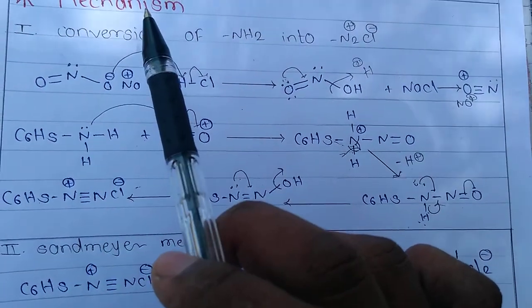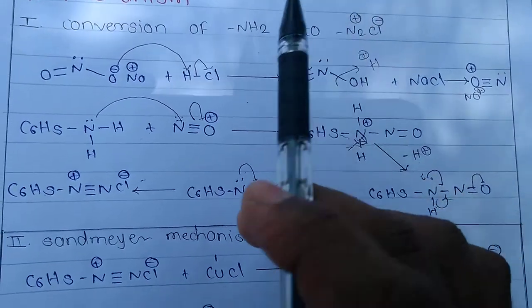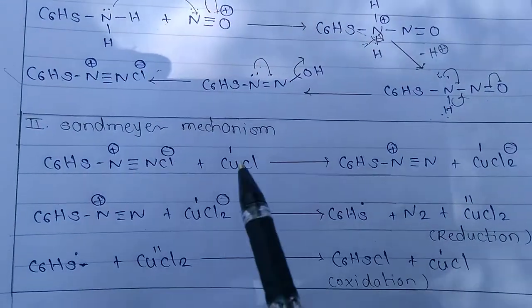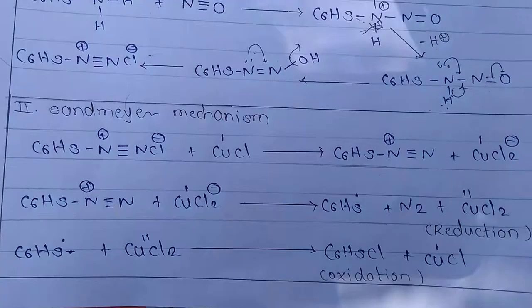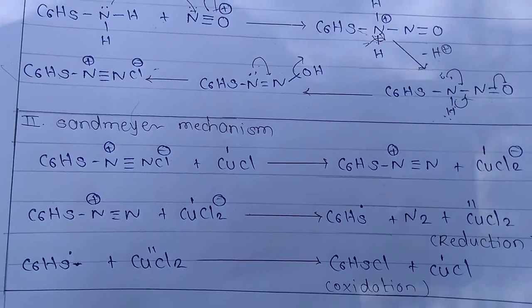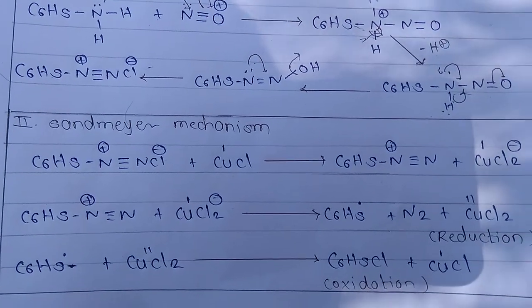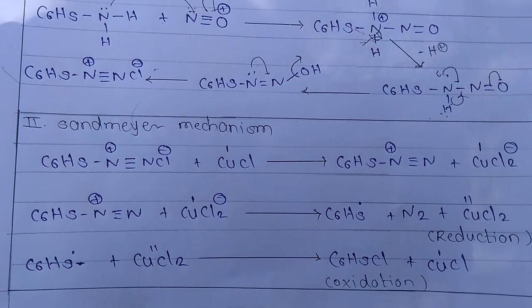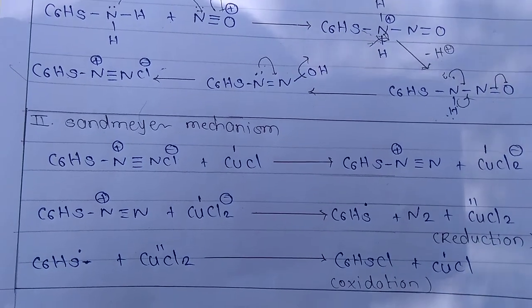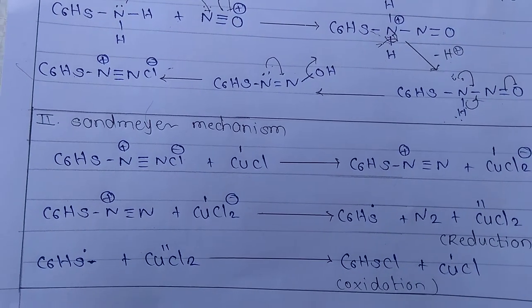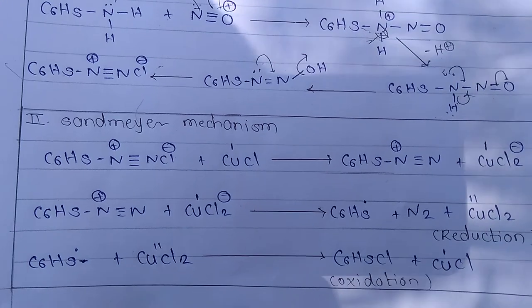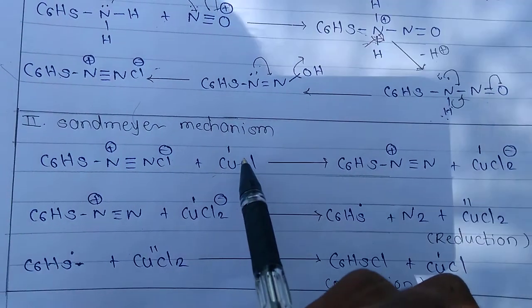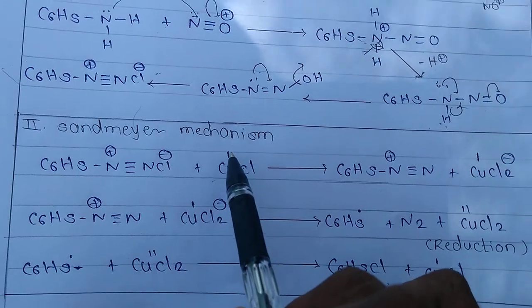So the first part of the mechanism is the conversion of NH2 to N2+ Cl-, and the second part is the Sandmeyer mechanism itself. In this second step, cuprous copper (Cu+1) has the power to reduce the diazonium ion to an aryl radical via oxidation-reduction involving one electron transfer.